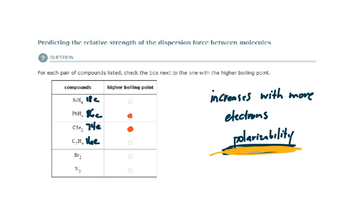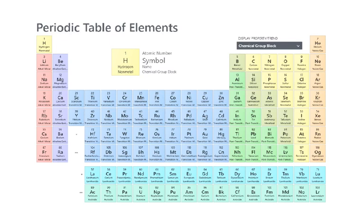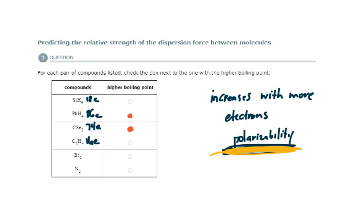And then if I'm looking at molecular bromine versus molecular nitrogen, if I check my periodic table, I've got 35 for each bromine atom times 2. That would be 70. Well, 70 electrons in that molecule total.